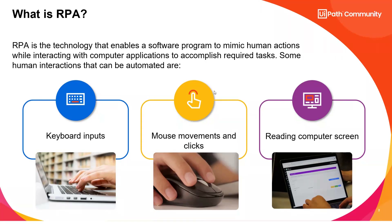Whatever you do with the help of a keyboard and mouse, the same thing can be automated with a robot. RPA is a software program that mimics human actions while interacting with computer applications. For example, if I tell you to download a list of all iPhones available on Amazon.com, as a human you'd go to Amazon.com, log in with your user ID and password, search for iPhones, grab the list, and download it.